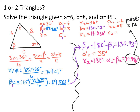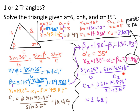Now we solve out both triangles completely, keeping them separate. For triangle 2: using law of sines, sine of 35 degrees over 6 equals sine of 14.886 degrees over C2, giving C2 equals 2.687. For triangle 1: gamma 1 equals 180 minus 35 minus 49.886, which is 95.114 degrees. Then C1 equals 6 times sine of 95.114 degrees over sine of 35 degrees, which equals 10.419.